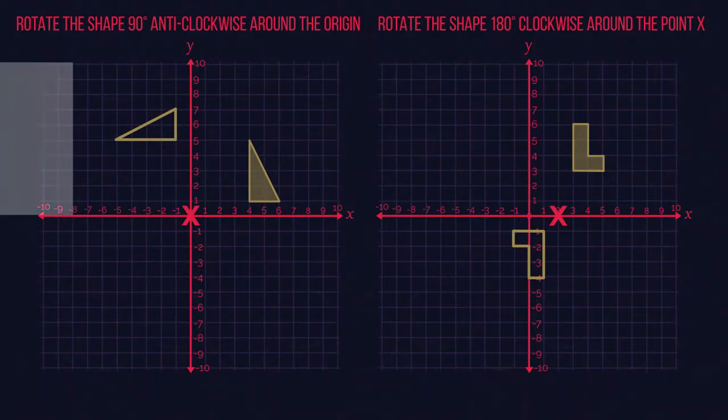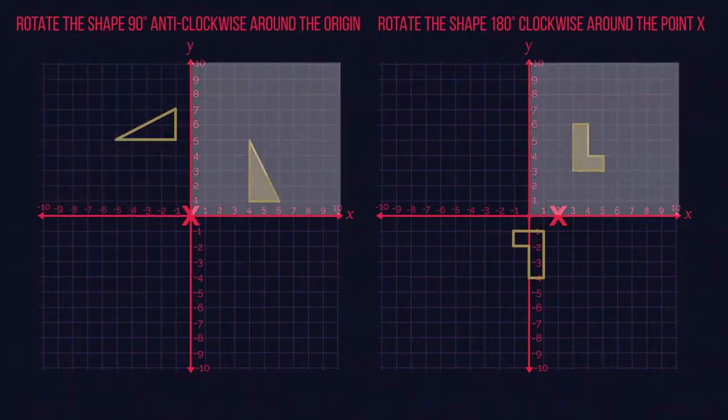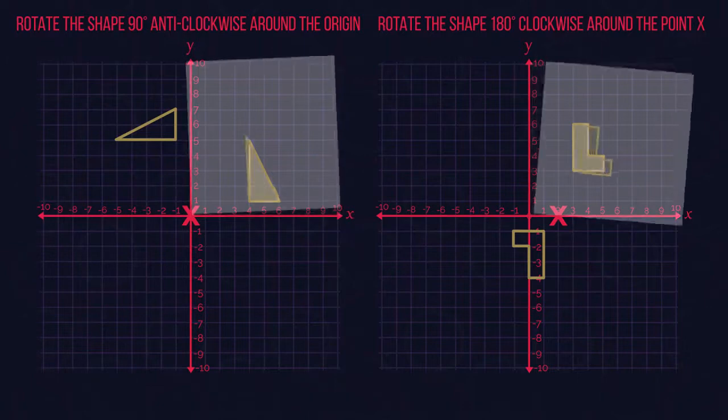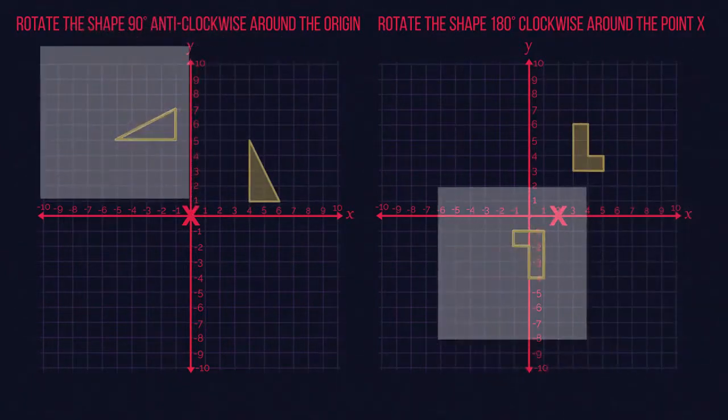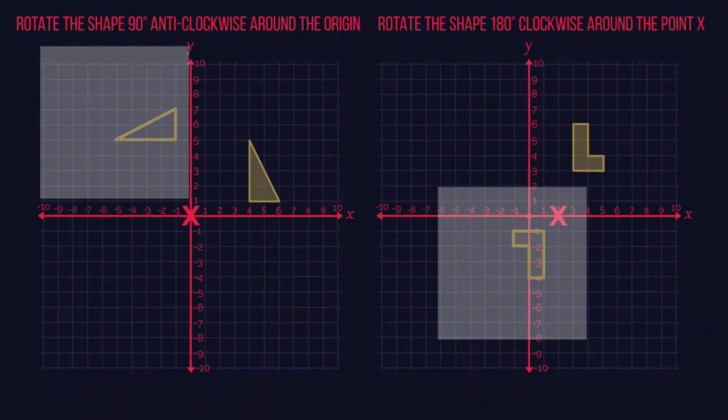If you're lucky, you'll be given tracing paper. So then you can just sketch the original shape, rotate your tracing paper around the correct amount, and see where the new shape should be drawn. Easy peasy.